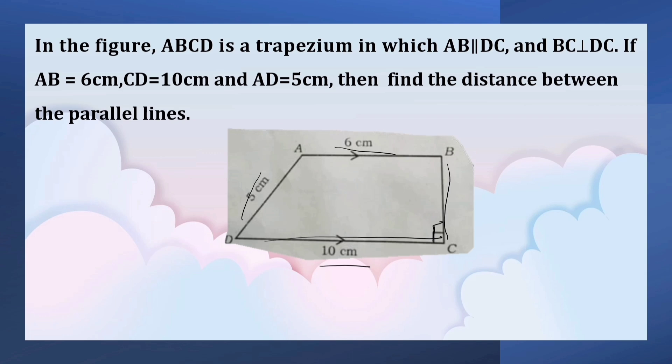The distance between the parallel lines means BC. In order to calculate BC, draw a line AE which is perpendicular to CD and also parallel to BC.